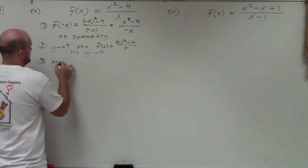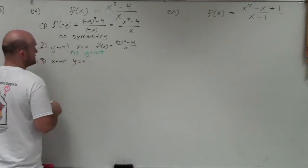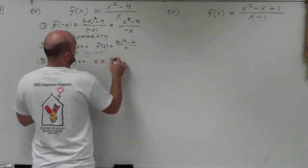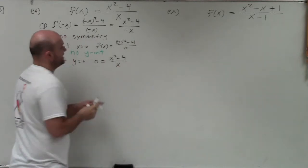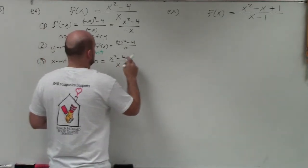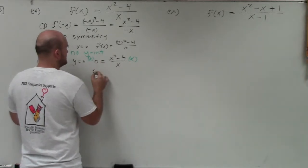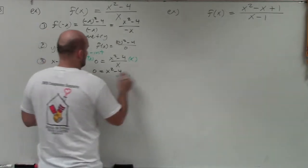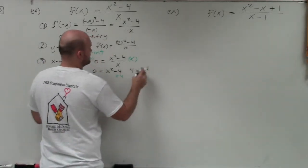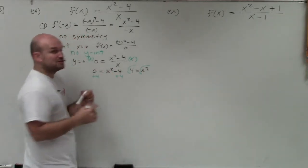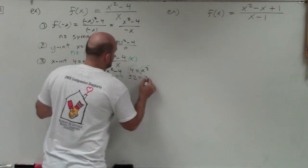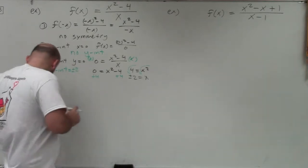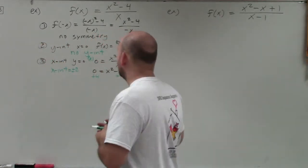Now let's check the x-intercept, which is when y equals 0. I'll replace f of x with 0 and solve for x. To get x off the denominator, I'll multiply by x on both sides. That gives me x squared minus 4 equals 0. Adding 4 to both sides gives 4 equals x squared. Taking the square root of both sides, remember to include plus or minus: x equals plus or minus 2. So my x-intercepts are at negative 2 and positive 2.